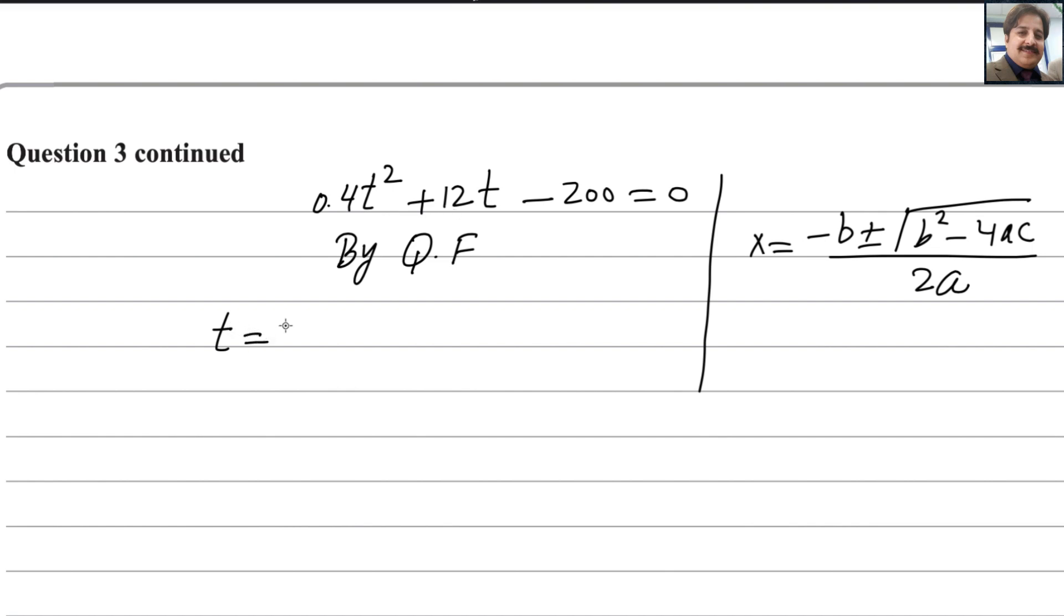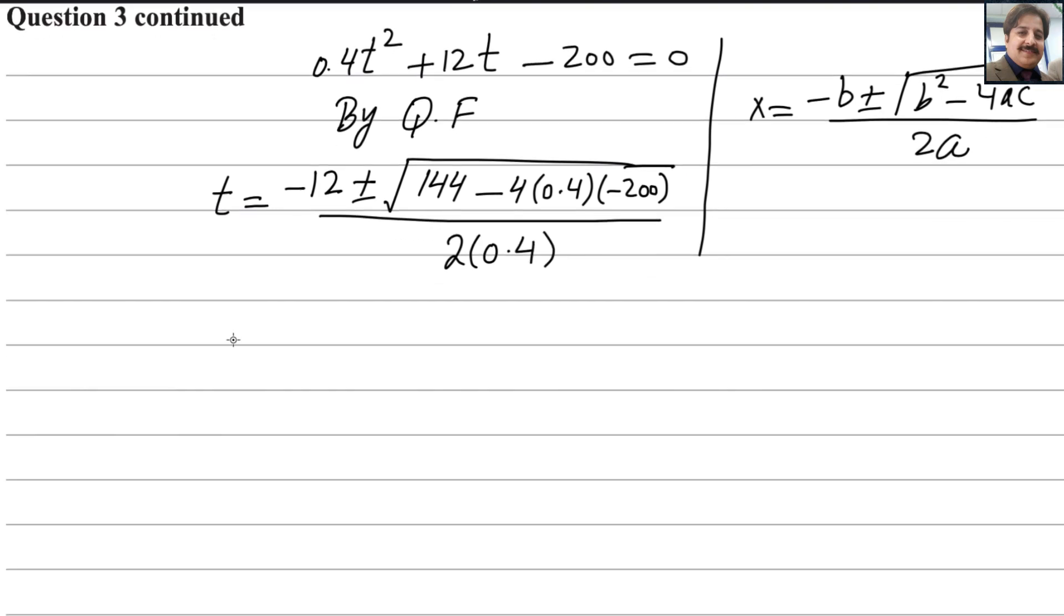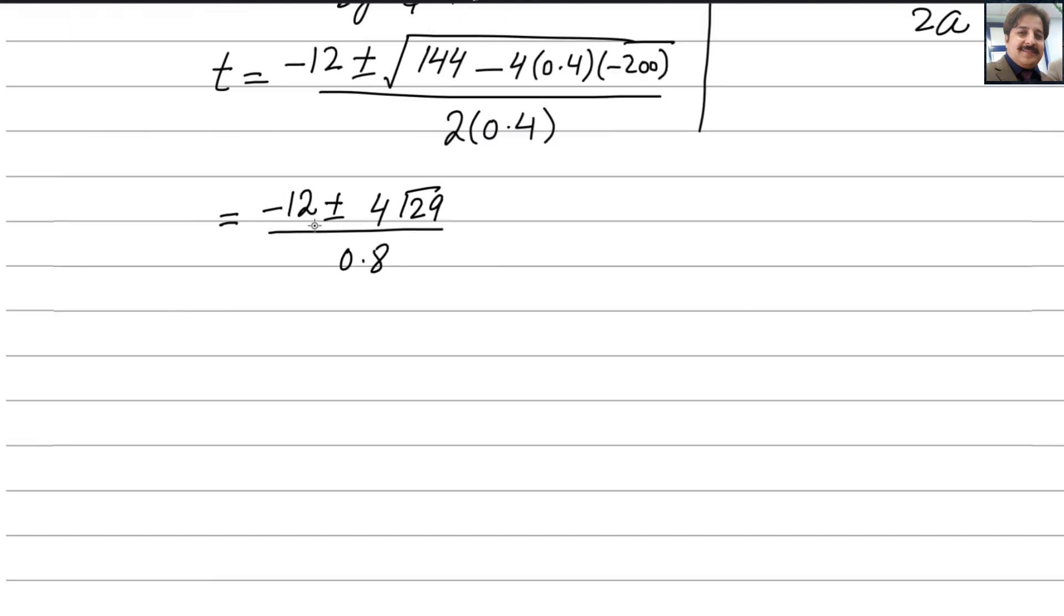Using that we can find the value of t. Minus b, b is 12, so minus 12 plus minus b squared, that's 144, minus 4a, a is 0.4, and c is minus 200, divided by 2a, 2 into 0.4. Use the calculator to find the value under the square root. We get 4 square root 29 divided by 0.8.